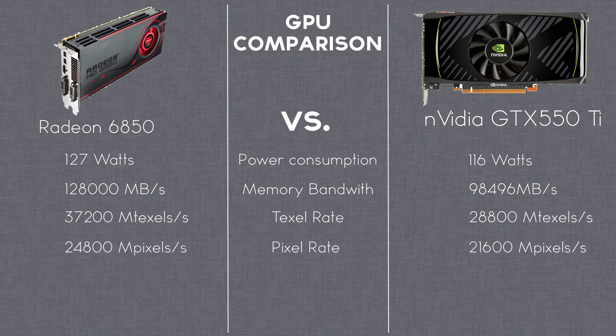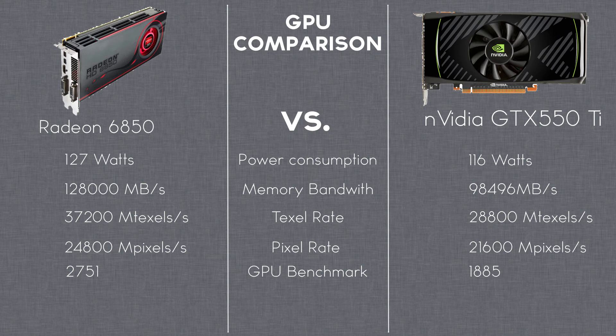When looking at third party benchmarks, such as from videocardbenchmark.net, the 6850 has a score of 2751, while the GTX 550 Ti has only 1885.